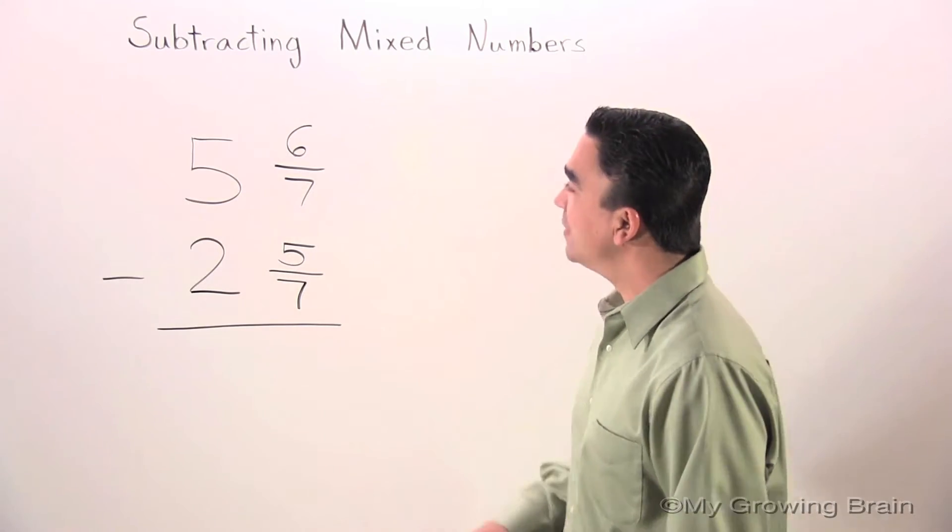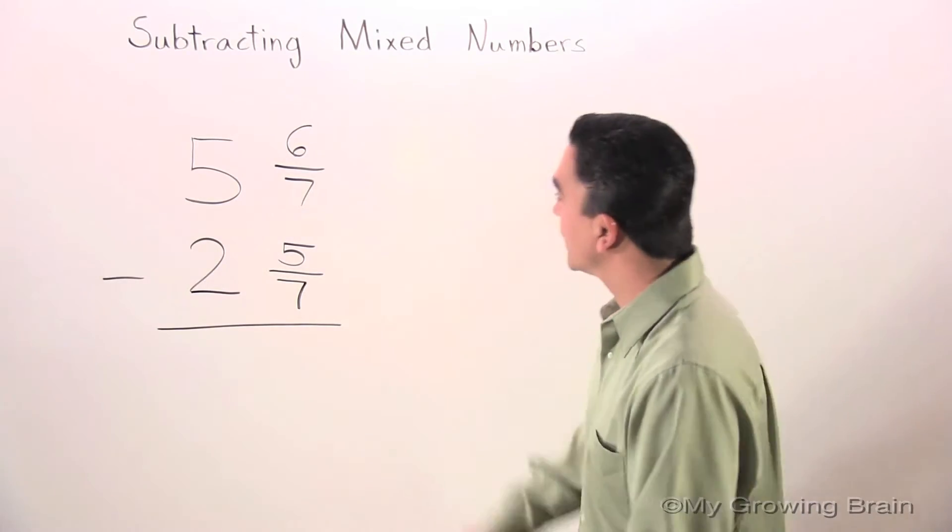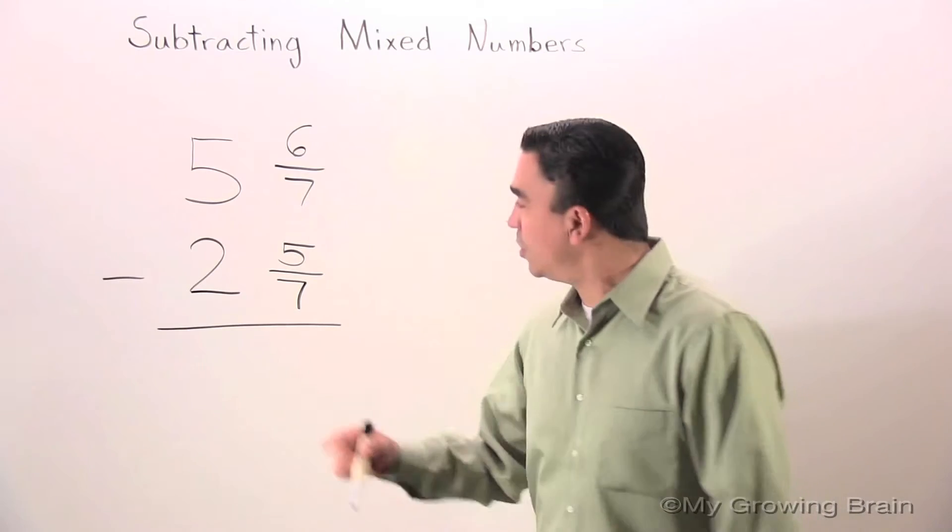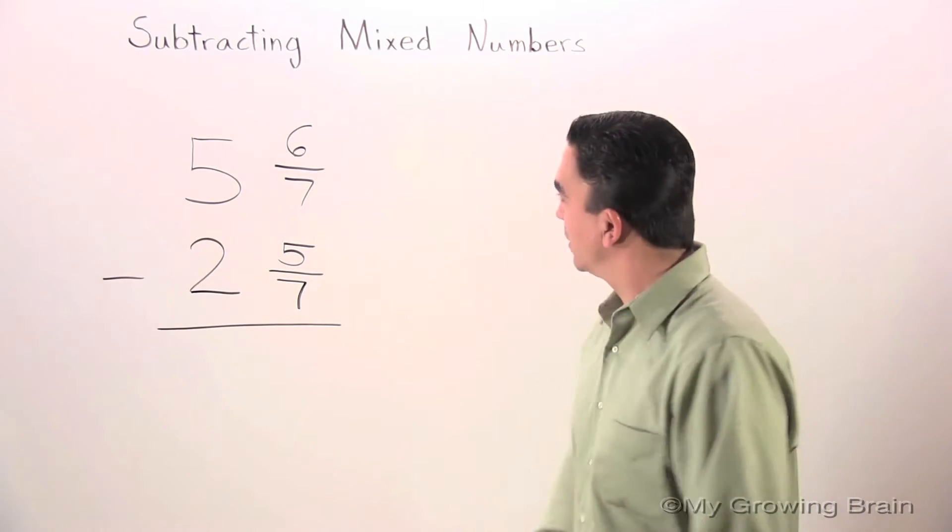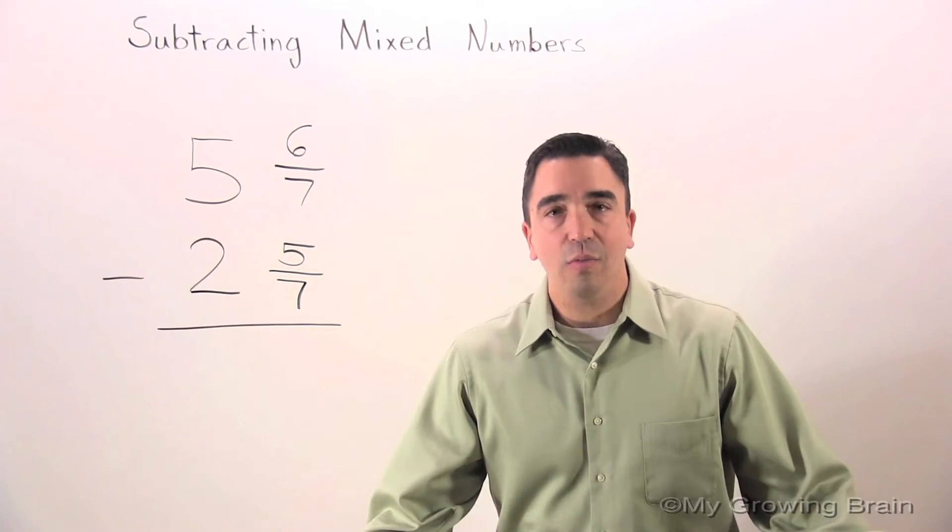Here's our problem. 5 and 6 sevenths subtract 2 and 5 sevenths. Alright. What's our first step?